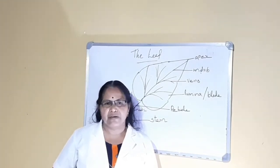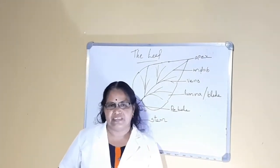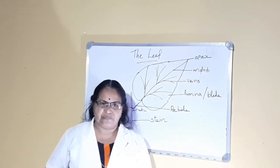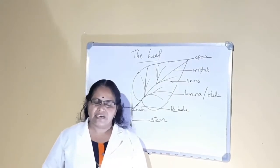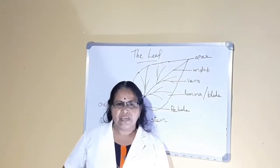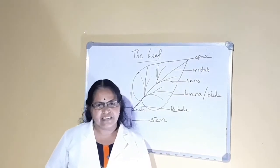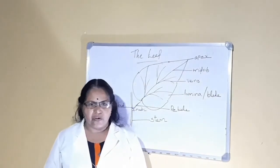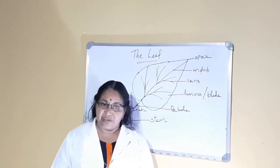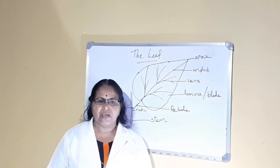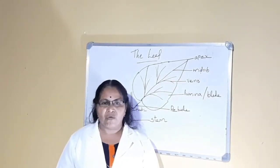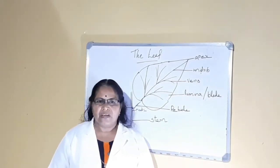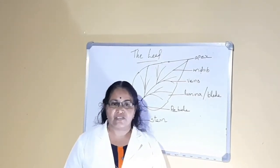Today let us study about the structure of the leaf. There are different types of leaves. You all have seen the leaves. Do you think all the leaves are alike? No. Some leaves are very big, some are very small, some leaves have different shapes. But basically all the leaves have a common structure.